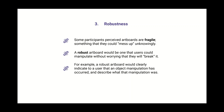Lastly, several participants perceived artboards as fragile — something they could easily mess up unknowingly — which caused them to be afraid to interact with projects. Instead, we propose that an artboard should be robust, so users can perceive it as something they can manipulate without worrying they will break it. A robust artboard would, for example, clearly indicate to a user that an object manipulation has occurred and describe what that manipulation was.